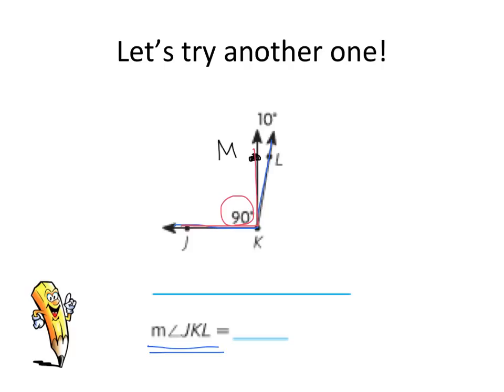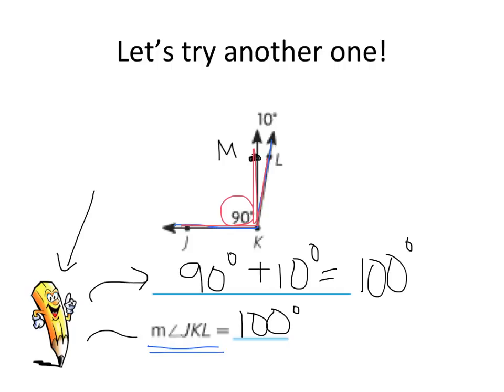I do see that angle MKL is 10. So now I need to add those two together. 90 degrees plus 10 degrees equals 100 degrees. I could use mental math for that. So now I can look and write 100 degrees here. Take a moment and write the equation and the total.